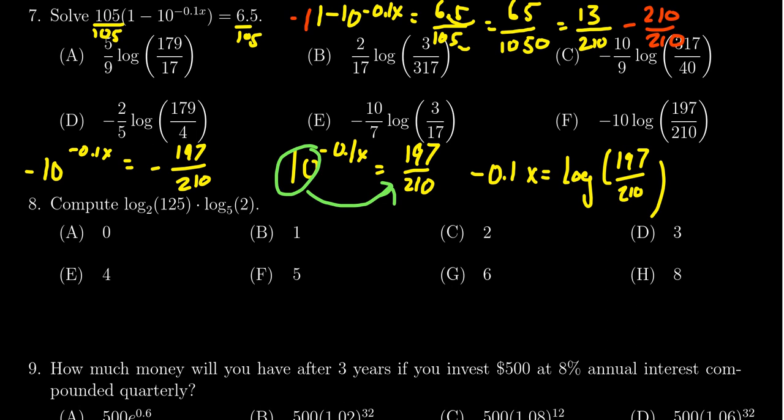And so then to finish up, we're going to divide both sides by negative 0.1. But 0.1 is actually 1 tenth. So if you're dividing by 1 tenth, you're actually dividing by 1 over 10, which means you're actually multiplying by 10. So you end up with x equals negative 10 log of 197 over 210, like so.